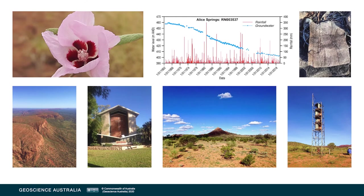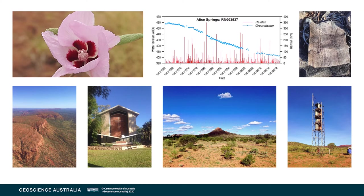Alice Springs is the largest town in Central Australia with a population of over 26,000 people. The Arrernte people have lived in the region for time immemorial, while European settlement started in the 1870s as part of the Overland Telegraph system. The town receives more than 400,000 visitors each year and contributes over $2.8 billion annually to the Australian economy. Alice Springs climate is designated as arid desert, where evaporation far exceeds rainfall. Average annual rainfall is about 280 millimetres a year, but highly variable — ranging from about 60mm in 1928 to over 780mm in 1974.